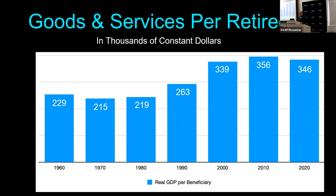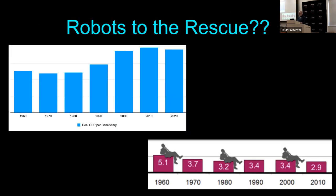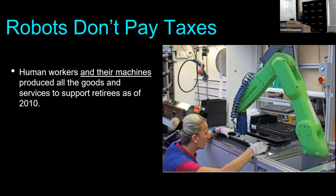This graph shows gross domestic product — the total goods and services produced in the country — per retiree. From 1960 through 2020, the general trend is up: our economy is producing more goods and services per retiree almost every year. So, look at the two together. If we only support retirees with taxes on current workers, we have a declining curve. But if we support them with all of the goods and services produced in the country, we have an increasing curve. As a retiree, I know which one I prefer.